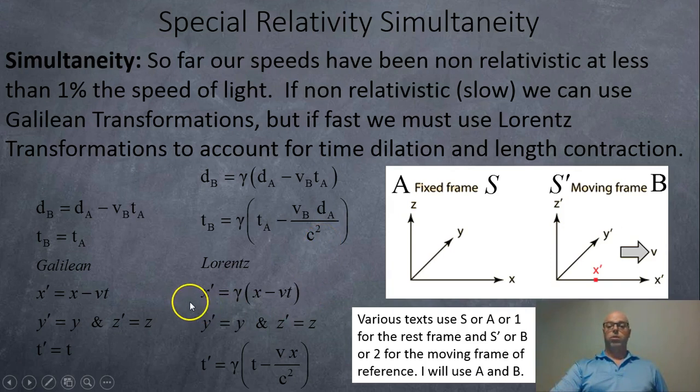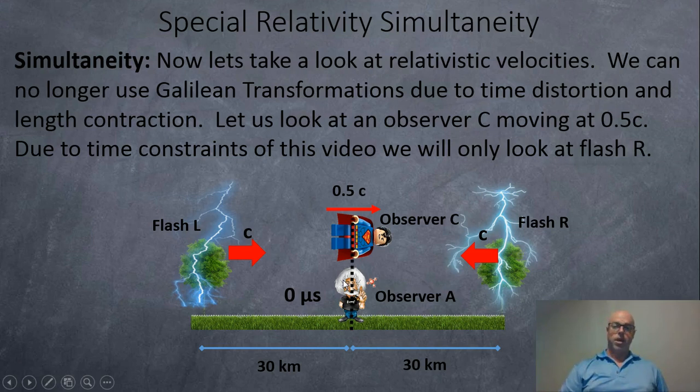And if you want, this is the more traditional way of writing it. x prime is equal to gamma, x minus VT. y prime is y, z prime is z, because we're only moving in the x direction. And t prime is equal to gamma bracket t subtract relative velocity V, x over c squared. And also in other textbooks, you'll see they use S or A or 1, depending on the textbook.